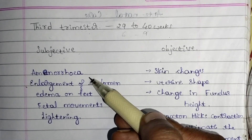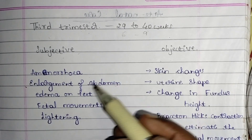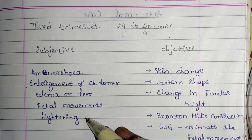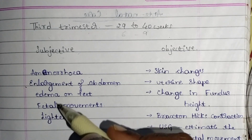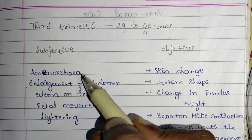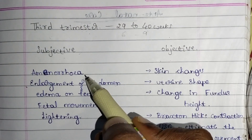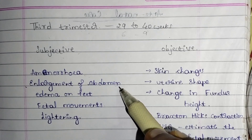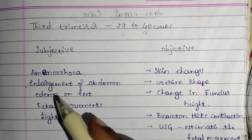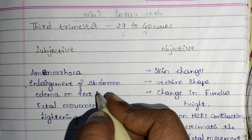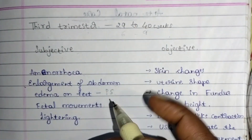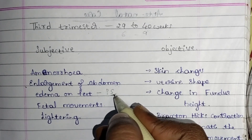In subjective data, we can see amenorrhea, enlargement of abdomen, edema on feet, fetal movement, and lightening. Amenorrhea is nothing but the absence of menstruation. Enlargement of abdomen means the uterus keeps enlarging. Edema on the feet is also known as a pressure symptom — the feet become swollen.